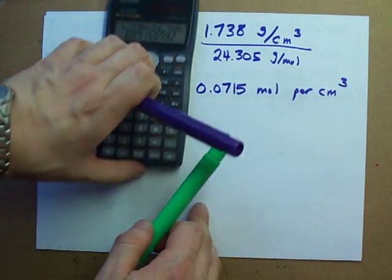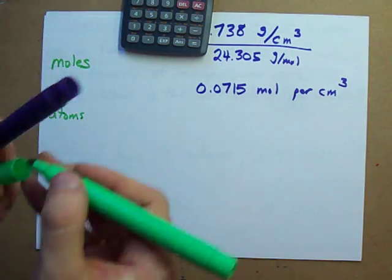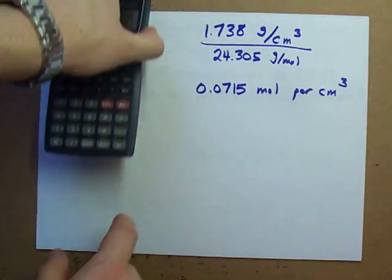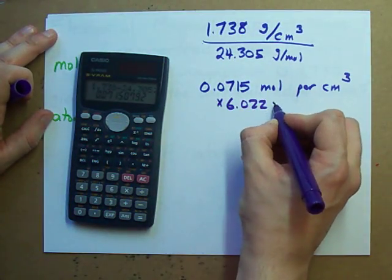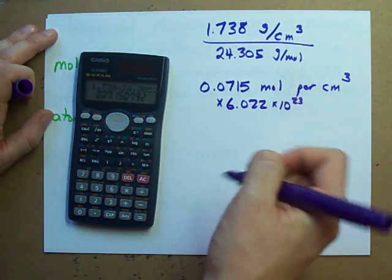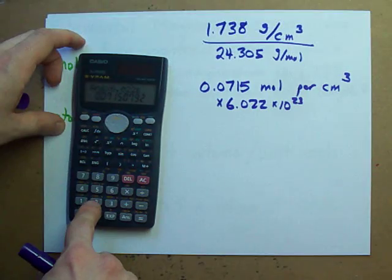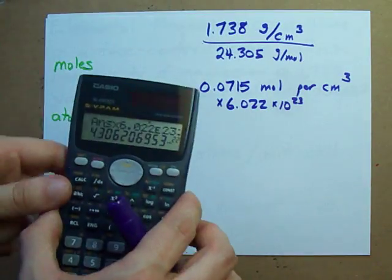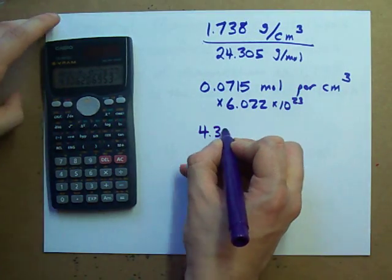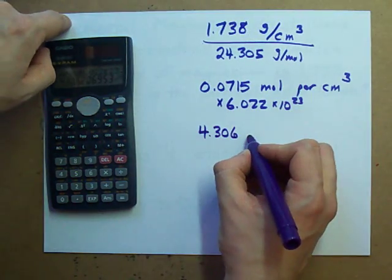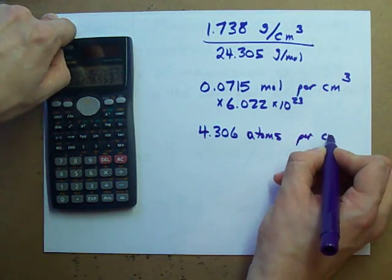How many molecules is that? Or rather, I should say, how many atoms is that? Well, to convert from moles to atoms, you multiply by Avogadro's number. Nothing here that's too shocking for you, I hope. Times 6.022 times 10 to the power of 23. The answer I get is 4.306.